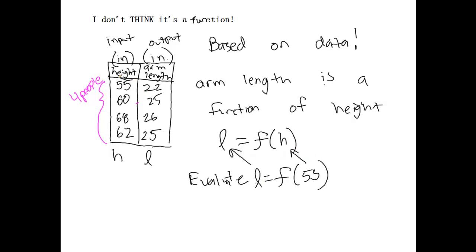I'd come over here, look at the height of 55 in the inputs, and see what the output is that corresponds to it. So, this would be an arm length of 22 inches would be a function of a person having a height of 55.